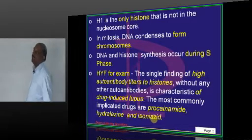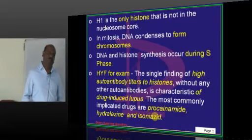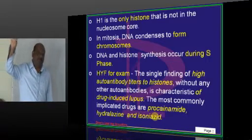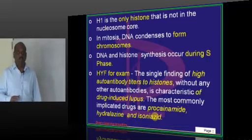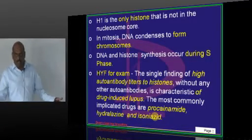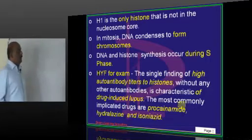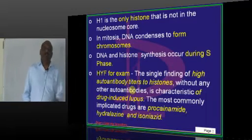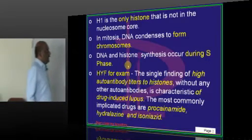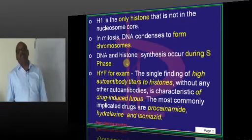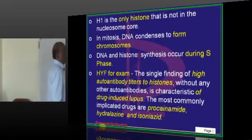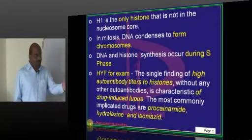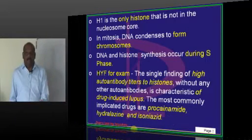A very common MCQ asked in the exam: high autoantibody titers to histone proteins, without any other autoantibodies — only anti-histone antibodies present — is diagnostic of drug-induced lupus. The drugs implicated in leading to the development of lupus are procainamide, hydralazine, and isoniazid.